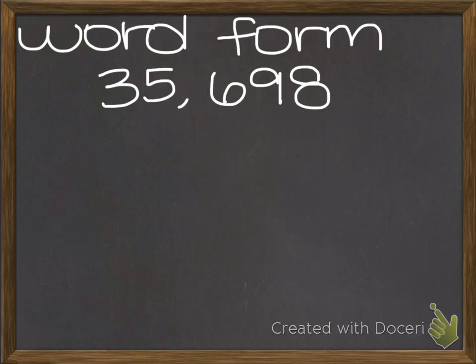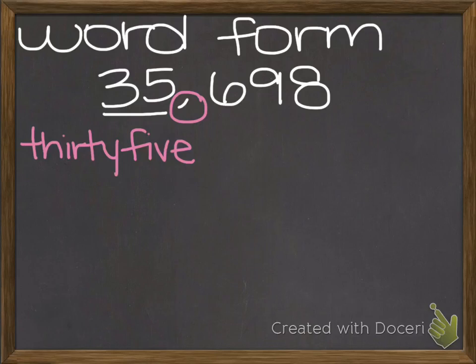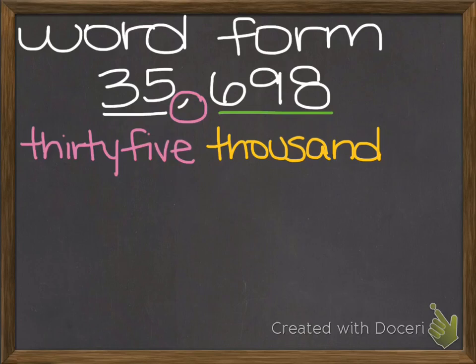Another way that we show numbers is through their word form. This is simply writing out in words what you would say when you read the number. So, remember we start with the thousands period. And this part says thirty-five. So, we write out thirty-five. Next, when we see the comma, that tells us to say the word thousand. And last but not least, we then look at the units period and write it as we say it. Six hundred ninety-eight.